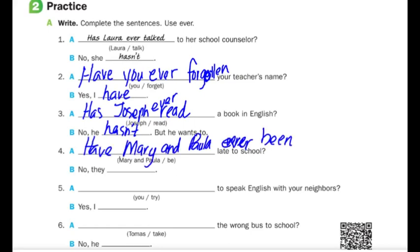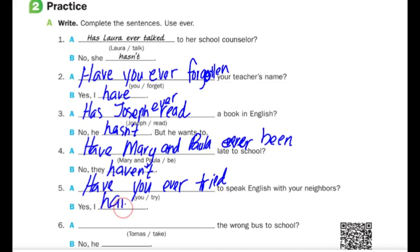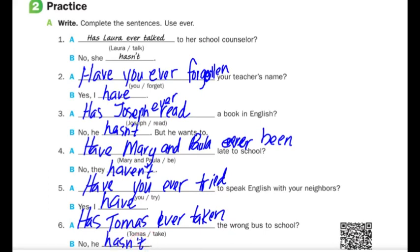Number four: Have Mary and Paula ever been late to school? No, they haven't. Number five: Have you ever tried to speak English with your neighbors? Yes, I have. Number six: Has Thomas ever taken the wrong bus to school? No, he hasn't.